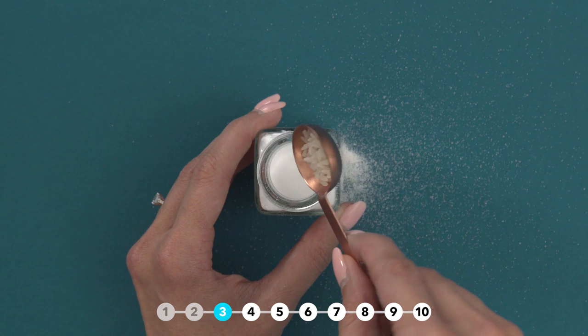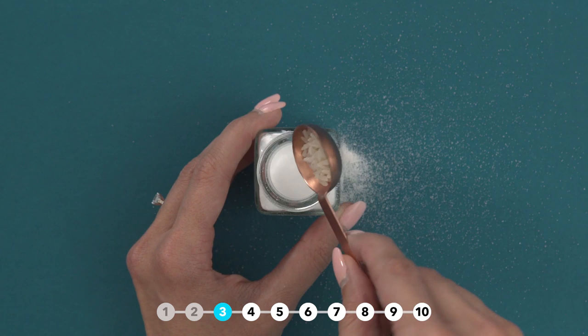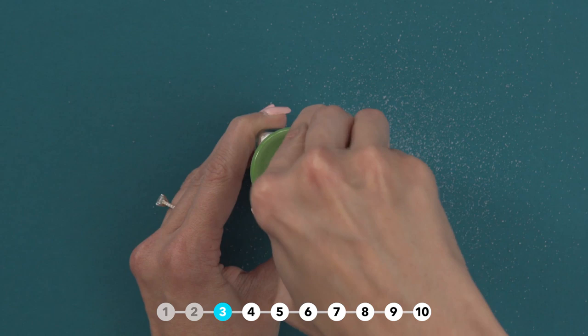Have you ever seen rice in a salt shaker and didn't know why? Uncooked rice absorbs moisture, and it will keep your salt clump-free.